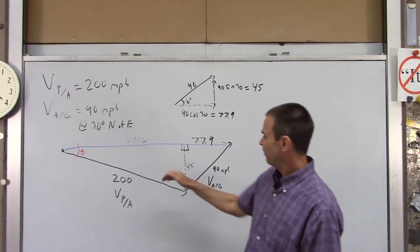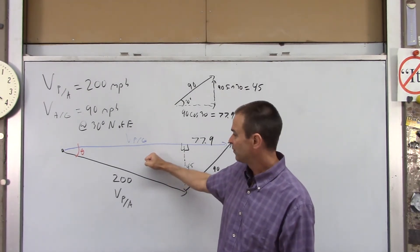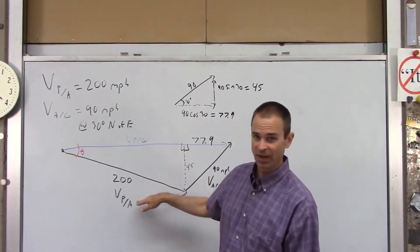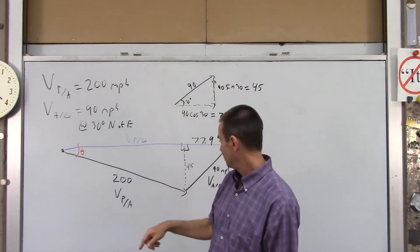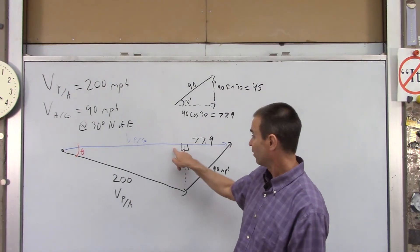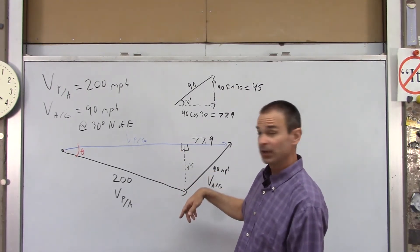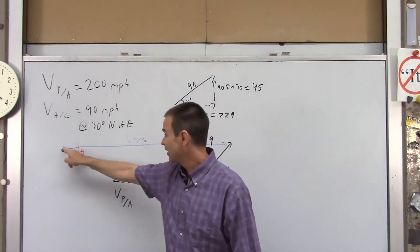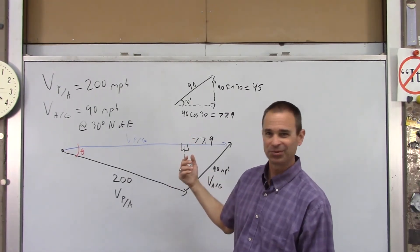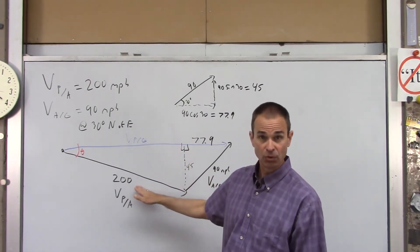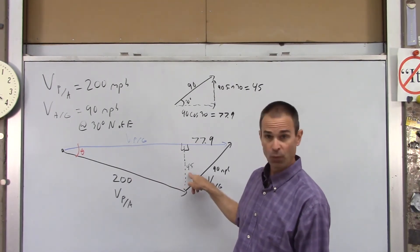All right, so now if you look at this triangle, that's the velocity of the plane with respect to the air triangle. Well, we can find everything else in that triangle. We have two legs and it's a right triangle, so we know that angle. So for instance, I can find the leg that goes from here to there. I'm just going to use Pythagorean's Theorem. Hypotenuse squared, so 200 squared, equals 45 squared plus that leg squared.